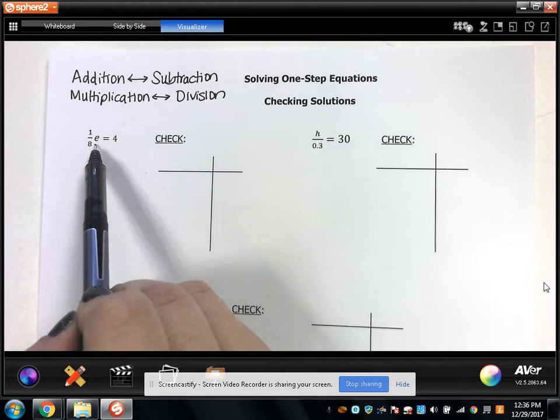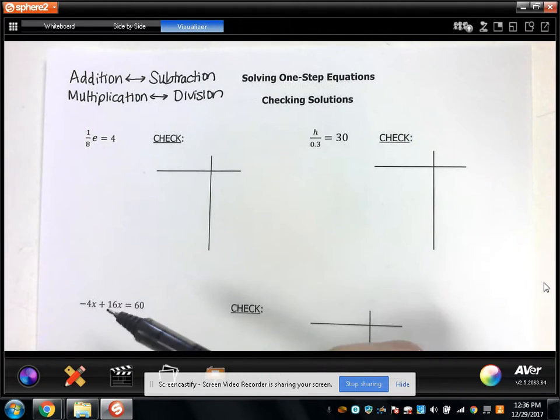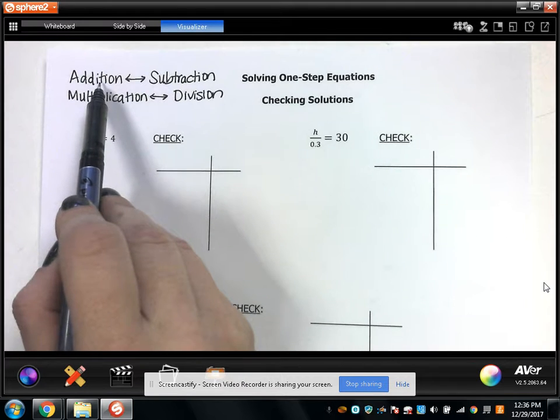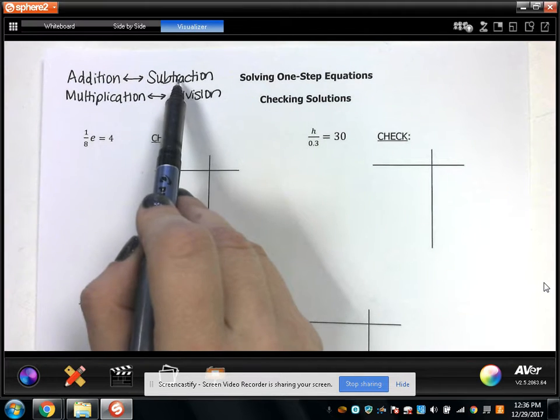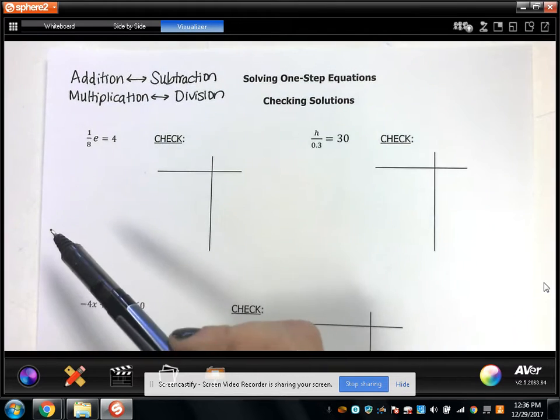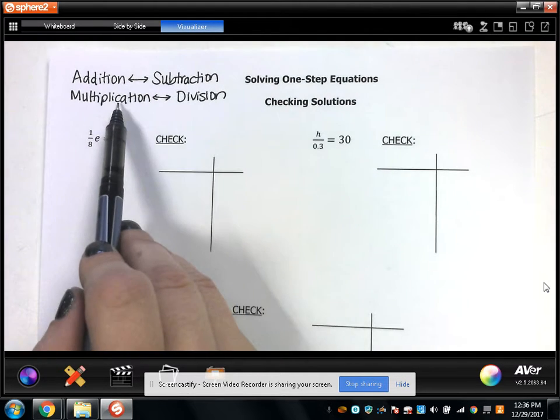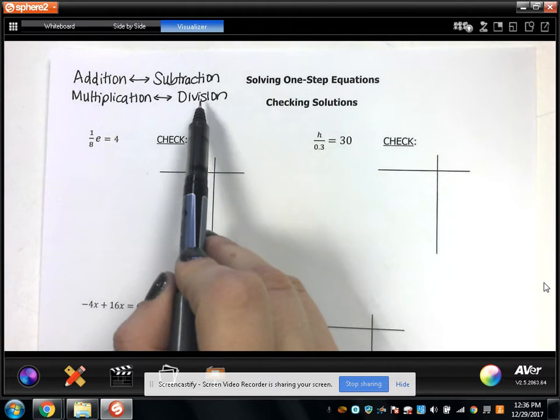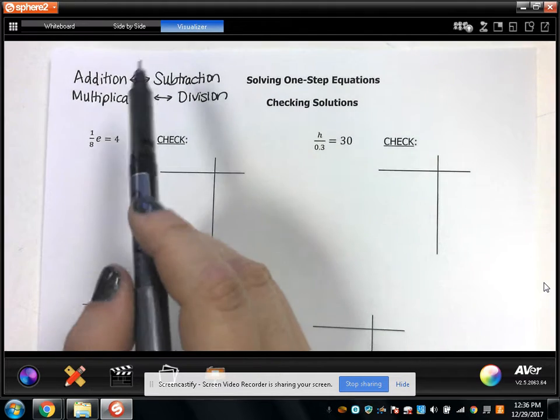I want you to always locate the variable in your equation. If the variable is adding something, the inverse of that is to subtract. If the variable is subtracting something, the inverse of that is to add. If the variable is being multiplied by something, the inverse is to divide. And if the variable is being divided by something, the inverse is to multiply.